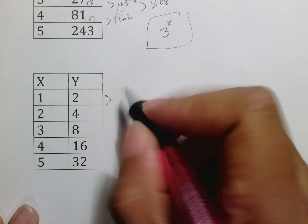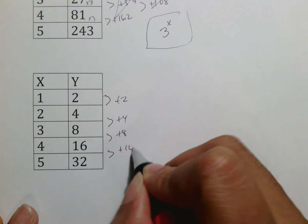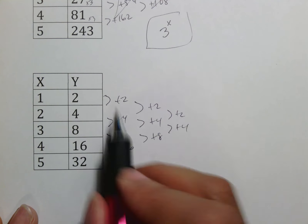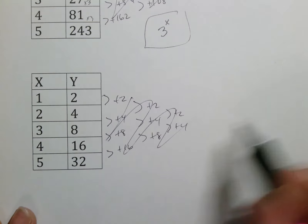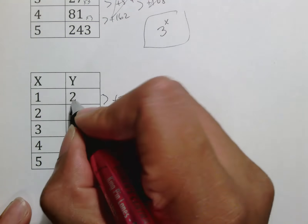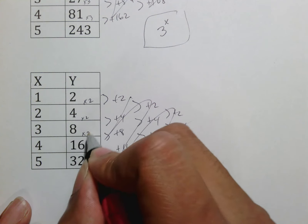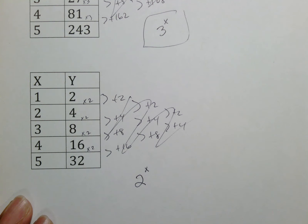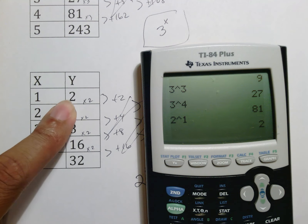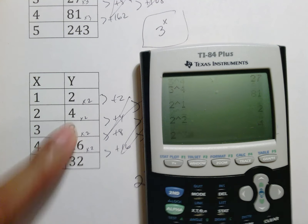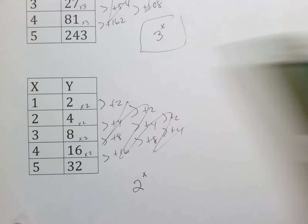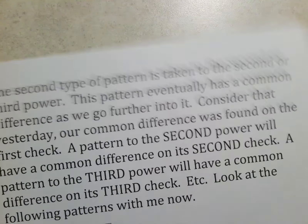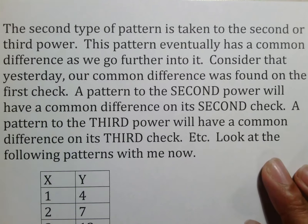Looking at the second example: the differences are plus 2, plus 4, plus 8, plus 16 — the same doubling pattern repeating. So we ask if something is being multiplied: 2×2=4, 4×2=8, 8×2=16, 16×2=32. Because it's multiplying by 2, use 2 as your base and simply put x as the power. Check: 2 to the first is 2, 2 squared is 4, 2 cubed is 8, 2 to the fourth is 16 — it works. This is called a geometric sequence, where you take the common number being multiplied — called the common ratio — as your base.